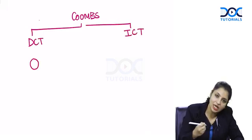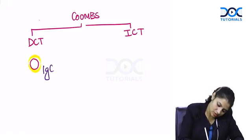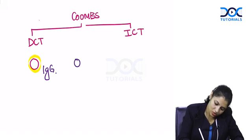Direct is when you're testing directly on the cells. Cells are coated by antibody - let's say the cells are coated by IgG antibody. Two cells are coated by IgG antibody.